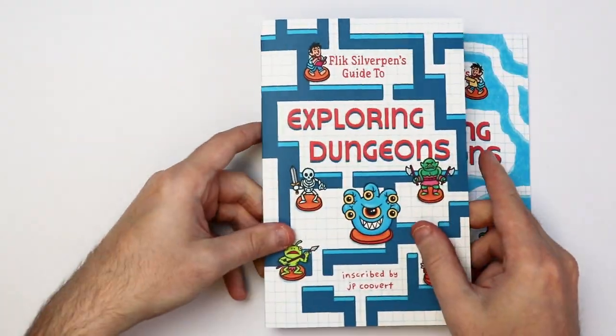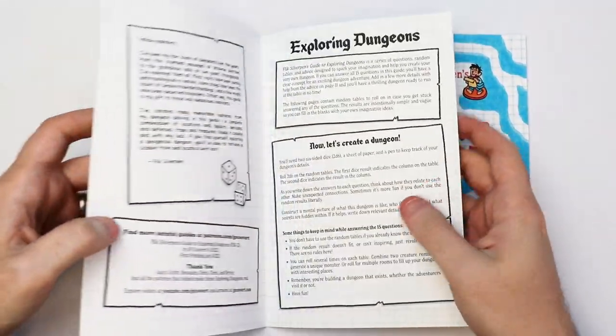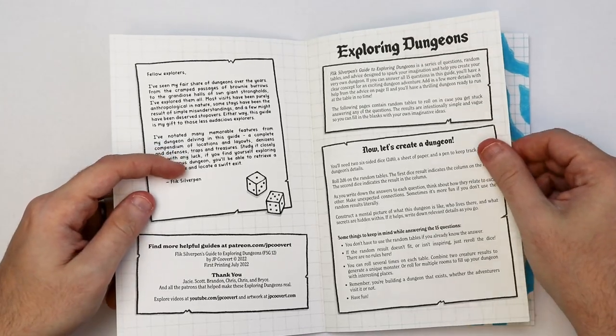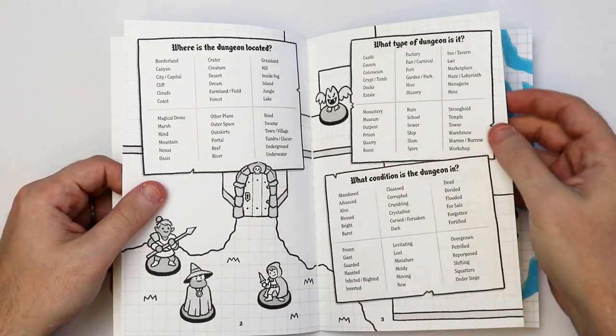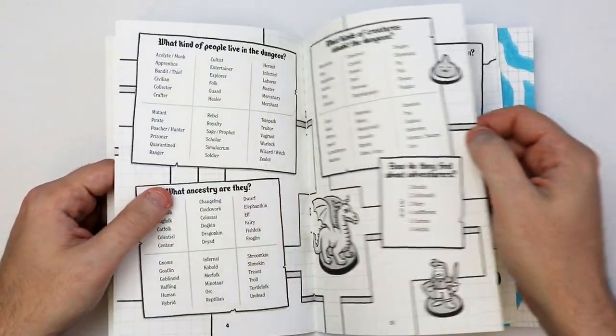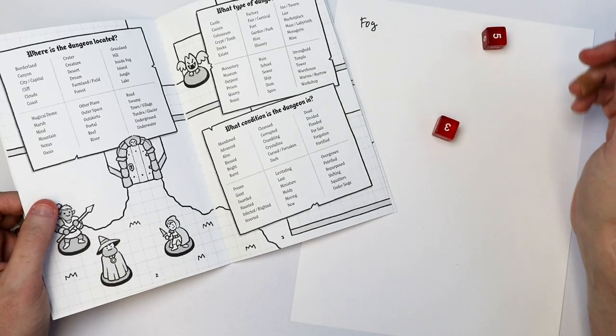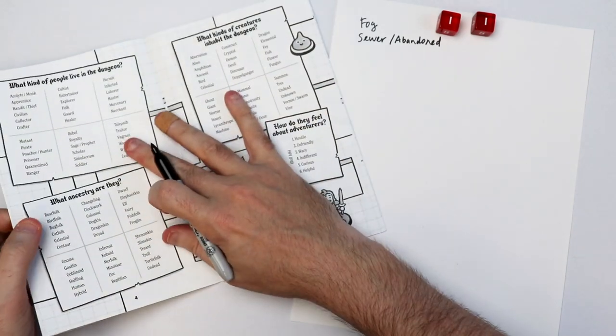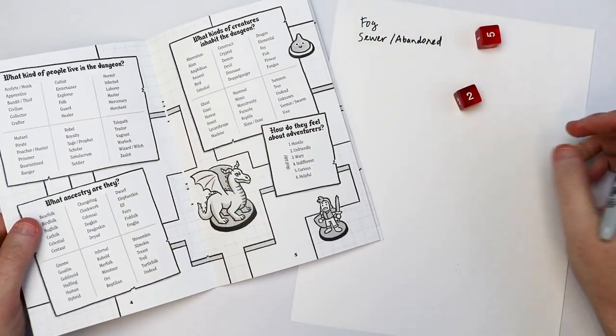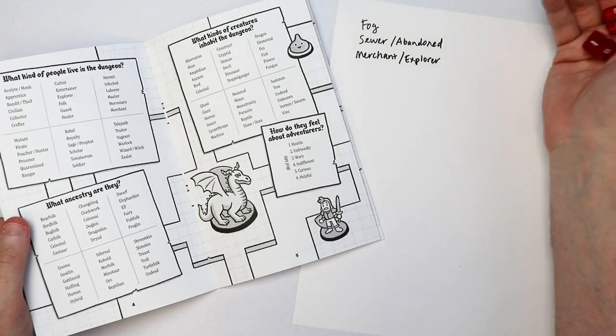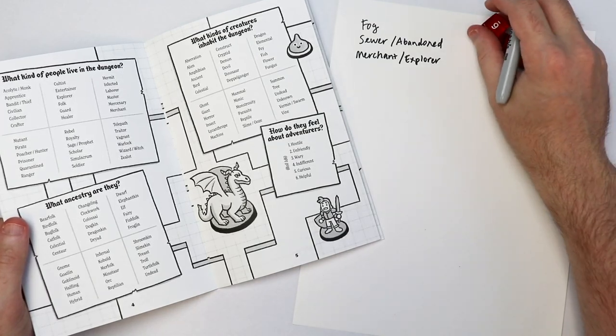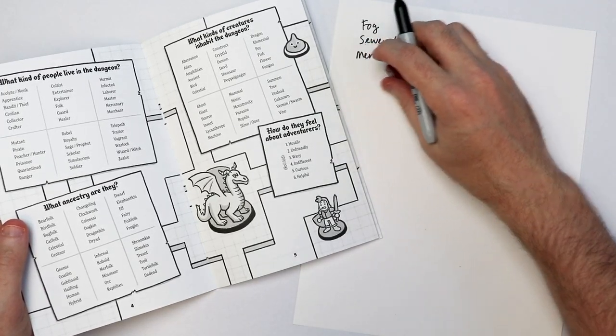Let's jump into Flick Silverpin's guide to exploring dungeons. This book is basically a collection of questions and inspiring random tables that you can roll on to help you generate ideas for building a dungeon adventure. Using 2d6, I'm just rolling on each of these tables and writing down the results that spark my imagination.